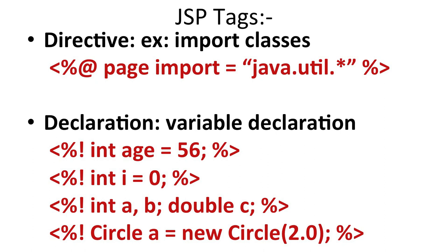The second category of JSP Tag is the declaration tag, used for variable declaration. It starts with the exclamation sign: <%! %>. For example, <%! int age = 56; %> — the value 56 will be copied to the age variable, so it is both declared and initialized. The variable age is of integer type.